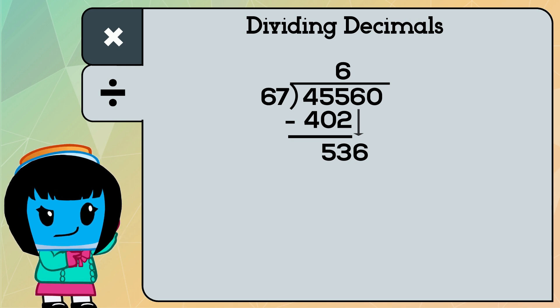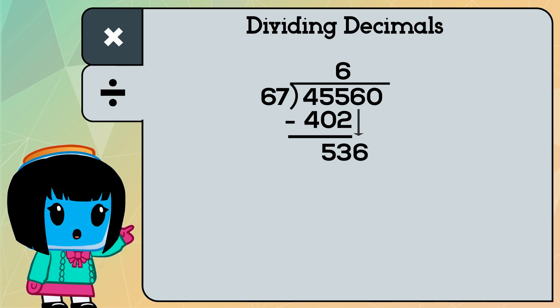Next, how many times does 67 go into 536? By estimating, we find that 67 goes into 536 eight times evenly.